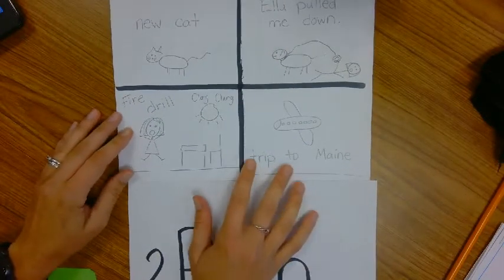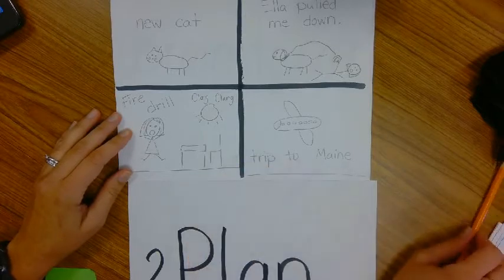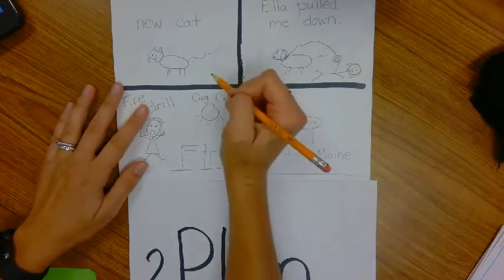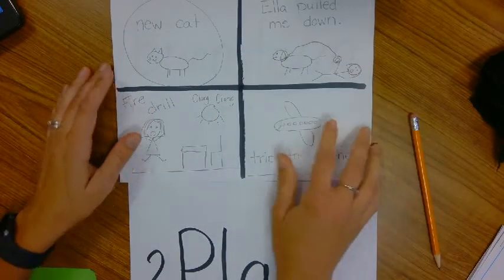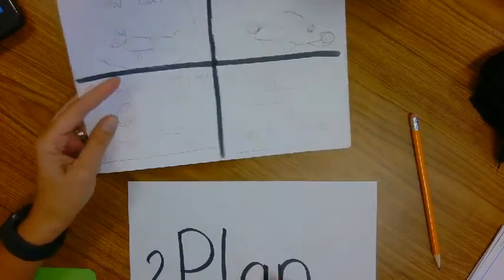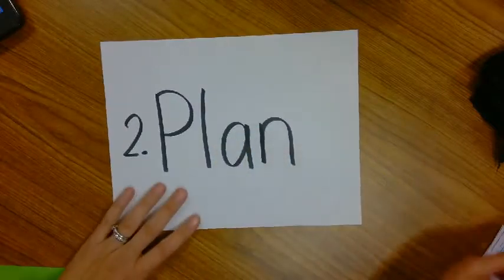Well, now it's time to pick one thing to write about. So I decided that I'm going to pick new cat. I'm going to write about the time that we got our new cat. So today's lesson is all about planning, step 2. You plan. Step one you think, step 2 you plan.